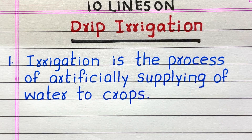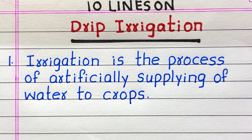Line 1: Irrigation is the process of artificially applying water to crops.